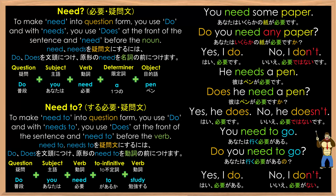Let's read the sentences one more time. You need some paper. Do you need any paper? Yes, I do. No, I don't. He needs a pen. Does he need a pen? Yes, he does. No, he doesn't. You need to go. Do you need to go? Yes, I do. No, I don't.